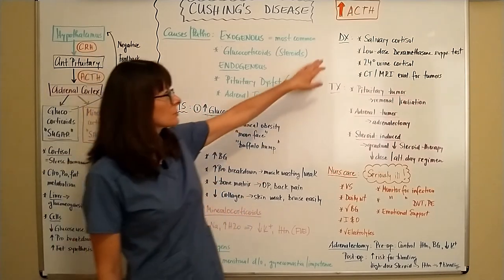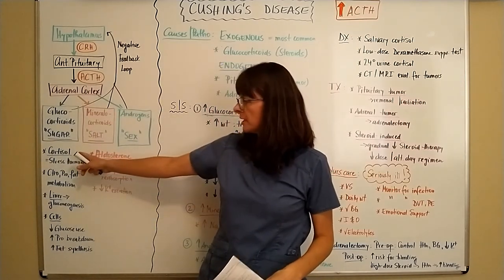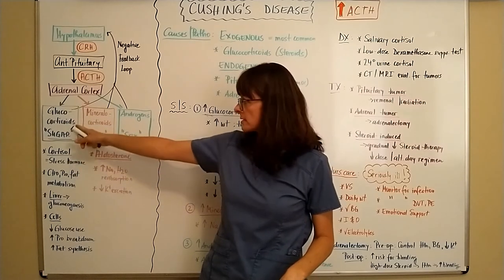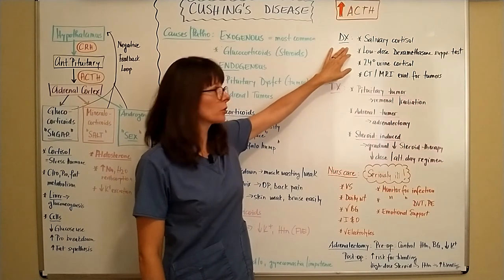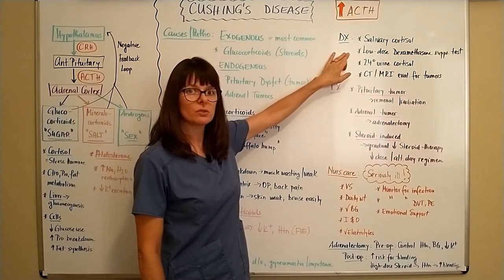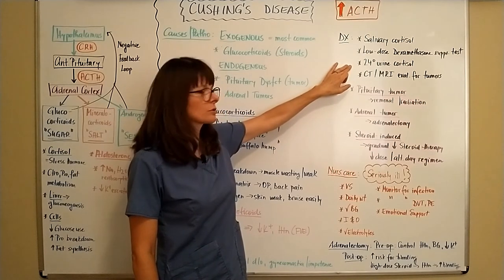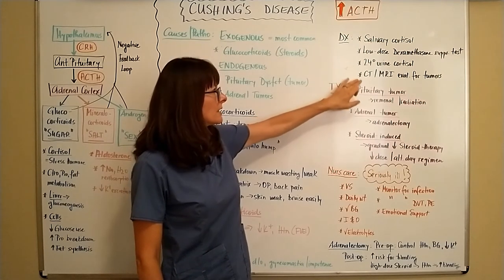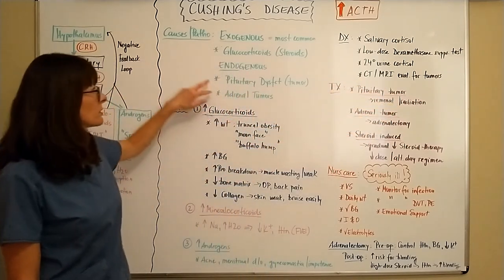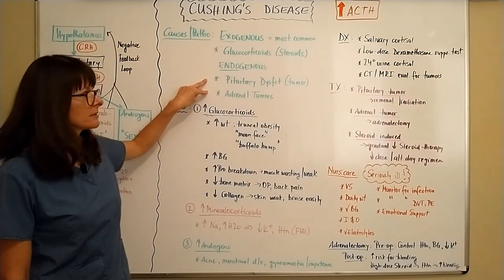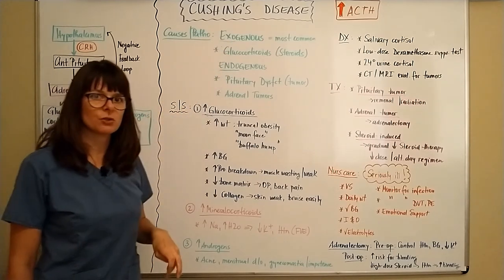To diagnose Cushing's disease, we need to measure cortisol, the stress hormone and primary glucocorticoid of concern. This can be done by obtaining a salivary cortisol level, by administering a low-dose dexamethasone suppression test, or by measuring urine cortisol in a 24-hour urine test, as well as obtaining a CT or MRI to evaluate for tumors of the pituitary gland and adrenal glands that can be reasons for increased ACTH production.